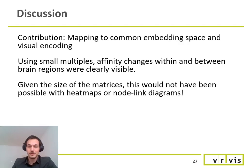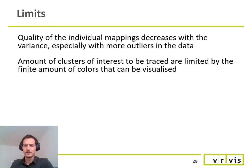Now to the discussion. We see the major contribution of this work in the mapping of individual matrices to a common embedding space and our proposed visual encoding. By using small multiples, affinity changes within and between brain regions were clearly visible.